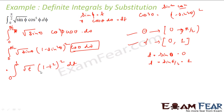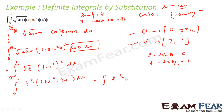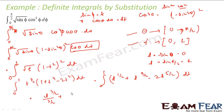Theta varies from 0 to π/2 and t varies from 0 to 1. Solving this: (1 − t²)² = 1 + t^4 − 2t², so the integrand expands to t^(1/2) + t^(9/2) − 2t^(5/2). Integrating term by term from 0 to 1 gives t^(3/2)/(3/2) + t^(11/2)/(11/2) − 2t^(7/2)/(7/2).